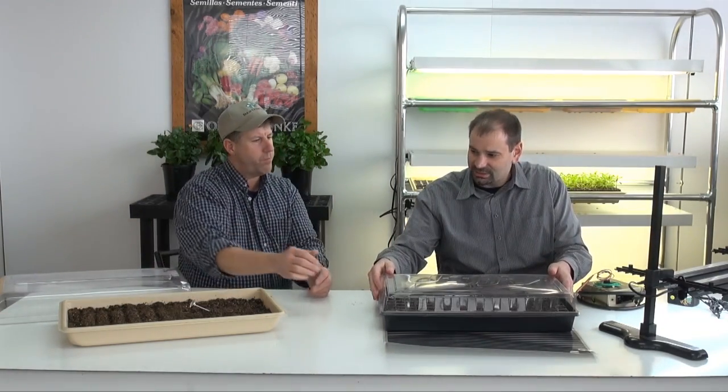Alright so we've covered sowing the seeds, having proper heat and proper light. Those are the main keys. Keeping them watered, good air flow around the plants. Usually once they're up and starting to get their true leaves on as well you can start giving them a little bit of fertilizer. Usually start at a quarter to a half rate on those so that'll give your seedlings a good healthy start.